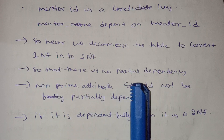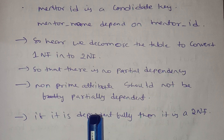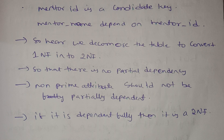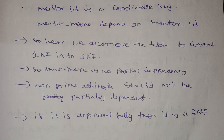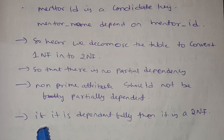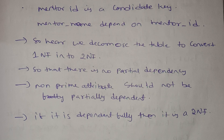So now there is no partial dependency. Non-prime attributes Student Name and Mentor Name each fully depend on their respective candidate keys — Student ID and Mentor ID. If non-prime attributes fully depend on the candidate key, then it is 2NF. So we have successfully converted to 2NF. In the next video, we will cover 3NF and BCNF.